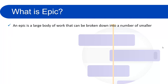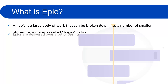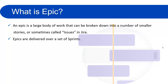So now we will see what is epic. An epic is a large body of work that can be broken down into a number of smaller stories, or sometimes called issues in Jira. Epics are delivered over a set of sprints. Epics capture a large body of work — it is essentially a large user story that can be broken down into a number of smaller stories, and it may take several sprints to complete an epic.